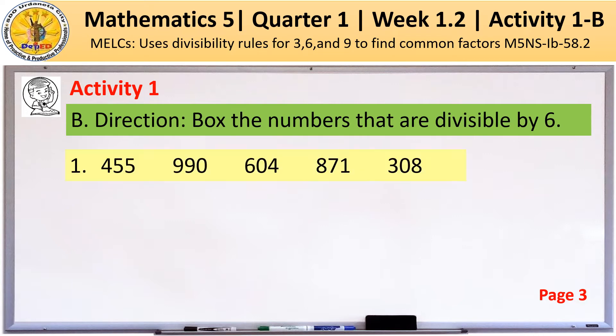We have number 1. Among this set of numbers, we're going to box the number that is divisible by 6. The correct answer is 990. Why?